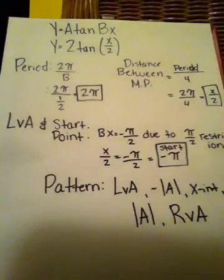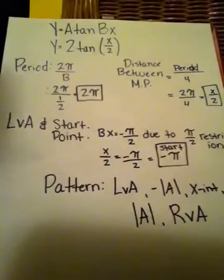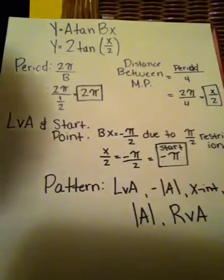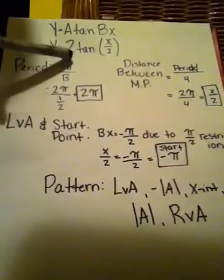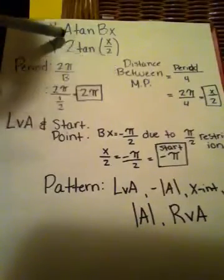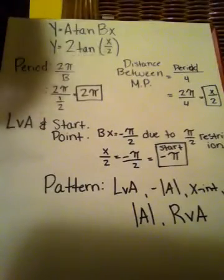Okay, number 15 reads: sketch one cycle of the graph y equals 2 times the tangent of x over 2. Identify the amplitude, period, and the five major points. You must identify each x coordinate within the cycle. Okay, our equation here goes along with the a times the tangent of bx.